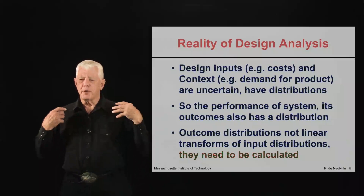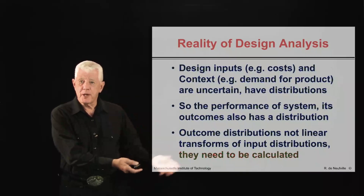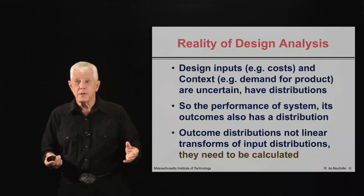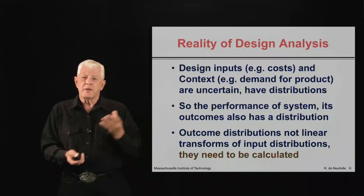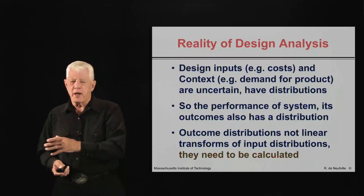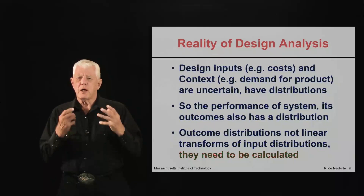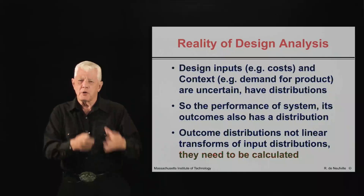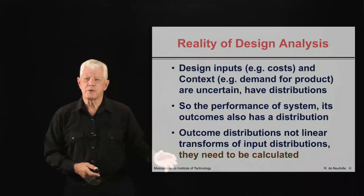That is, if you put in a normal distribution, you don't necessarily get a normal distribution out — you're almost certain not to. Why is this? It's because we have complex systems that perform non-linearly. There'll be capacity constraints so that you can get the downside but not the upside. There are all kinds of reasons why what goes in gets mixed up through the system, and you get a different kind of distribution afterwards.